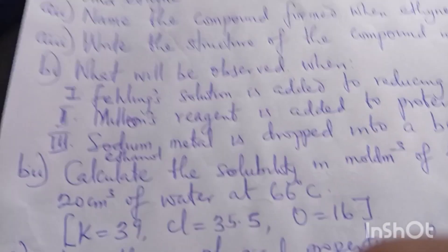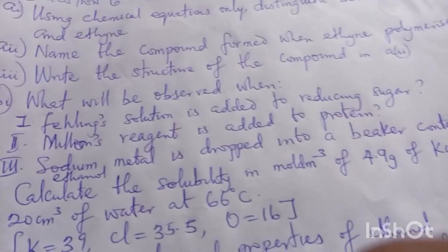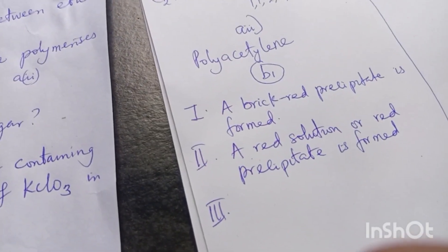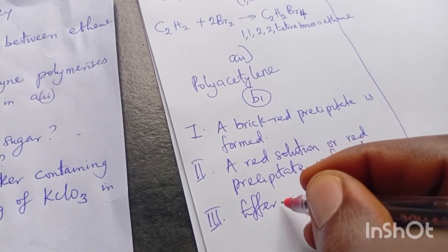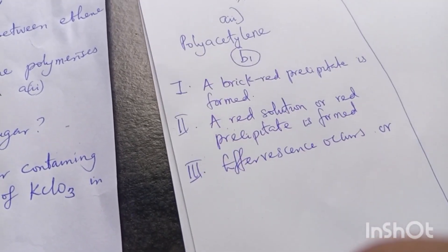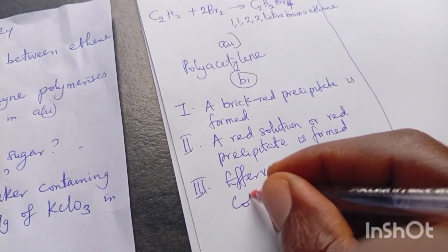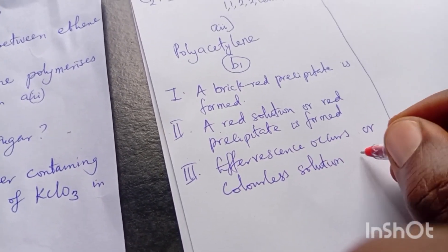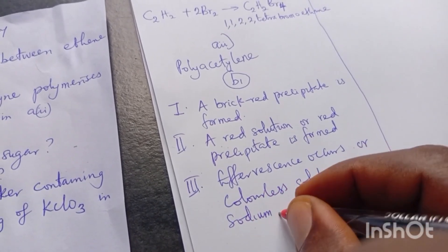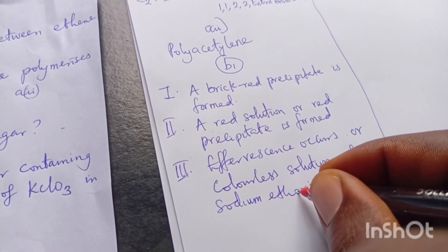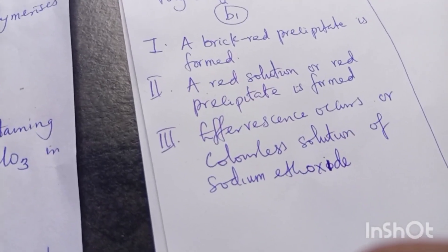For question three: sodium metal is dropped into a beaker containing ethanol. Whenever sodium reacts with ethanol, there must be effervescence because a gas is produced. Effervescence occurs. You can also say a colorless solution of sodium ethoxide is formed.